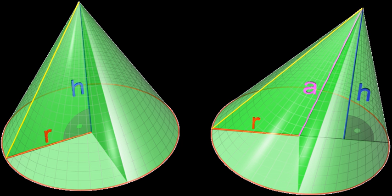Ruled surface, Translation of axes. Notes. See also: Bacone, Cone, Cylinder, Democritus, Generalized conic, Hyperboloid, Pyrometric cone, Quadric, Rotation of axes, Ruled surface, Translation of axes. Notes. See also: Bacone, Cone.